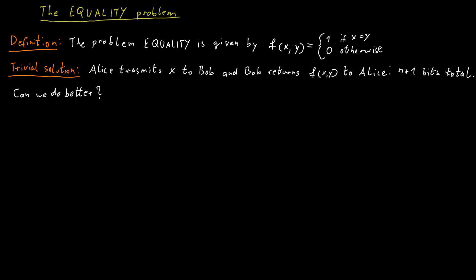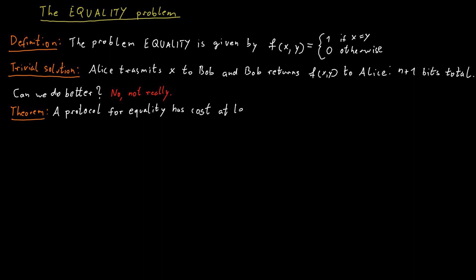In the case of the OR function or the median function, we were able to come up with communication protocols that were better than this type of naive solution. But for the equality function, it turns out this isn't really possible, and we can show that there's a lower bound of n for the communication complexity of this function. So no communication protocol that uses fewer than n bits of communication in the worst case can solve this problem successfully.